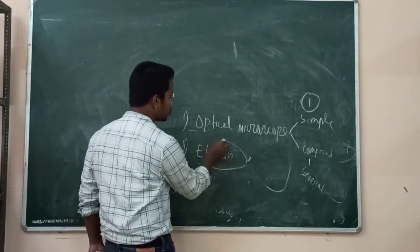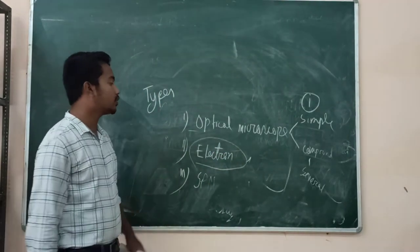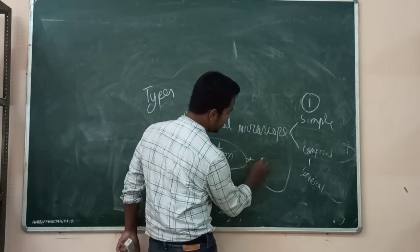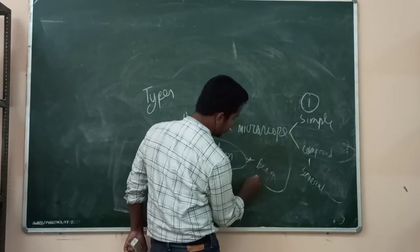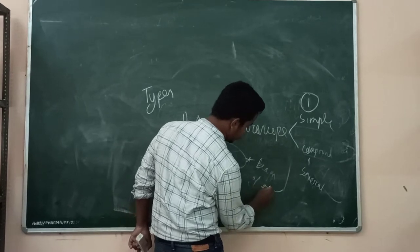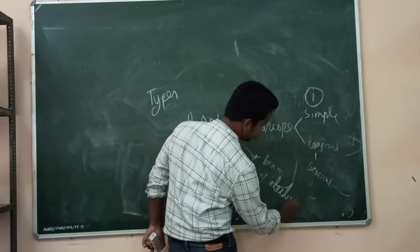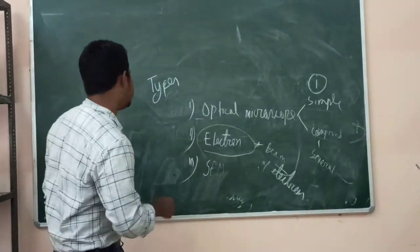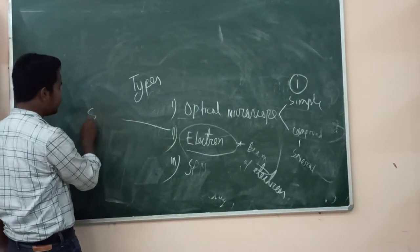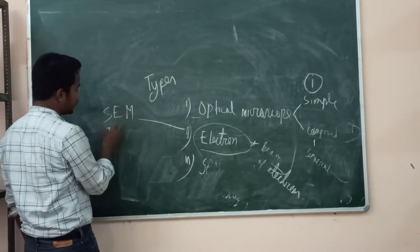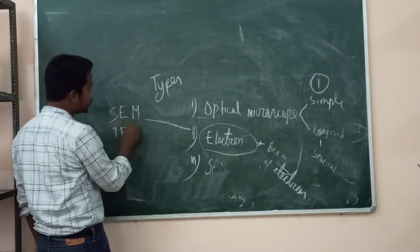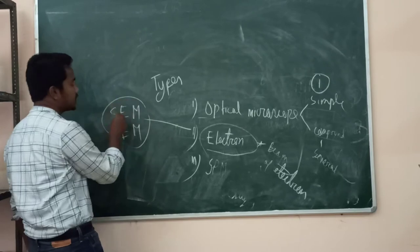In electron microscope, instead of light, you can use electron beam.